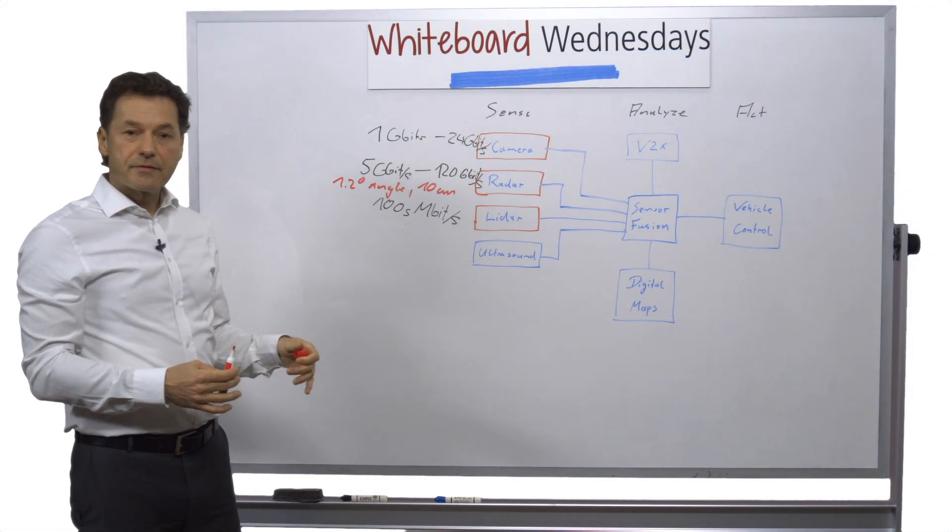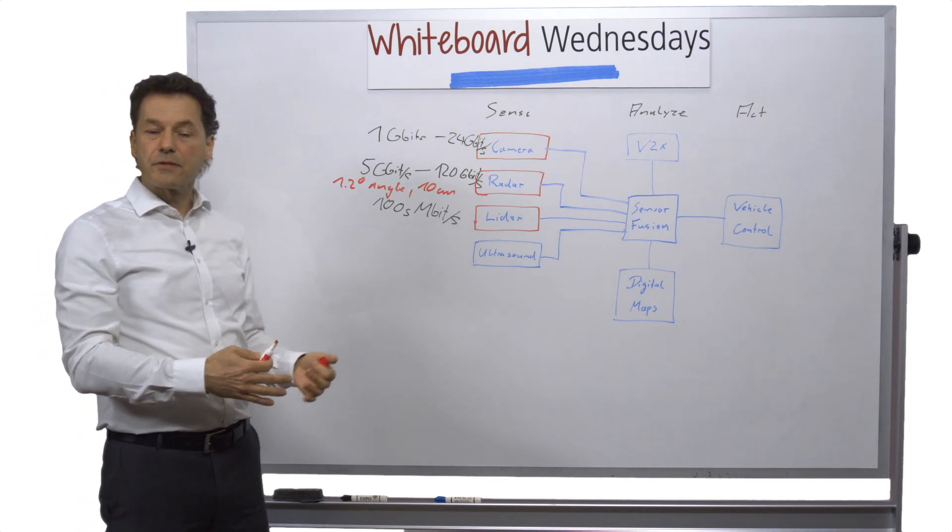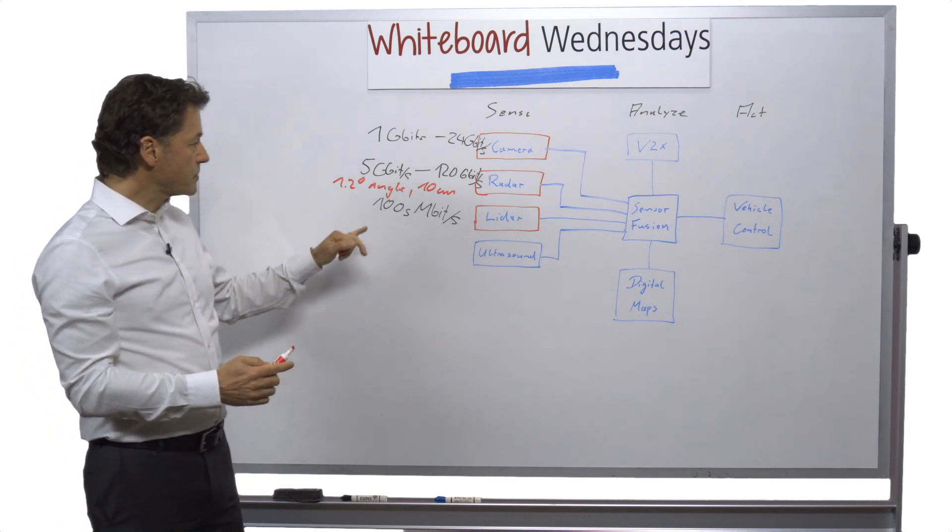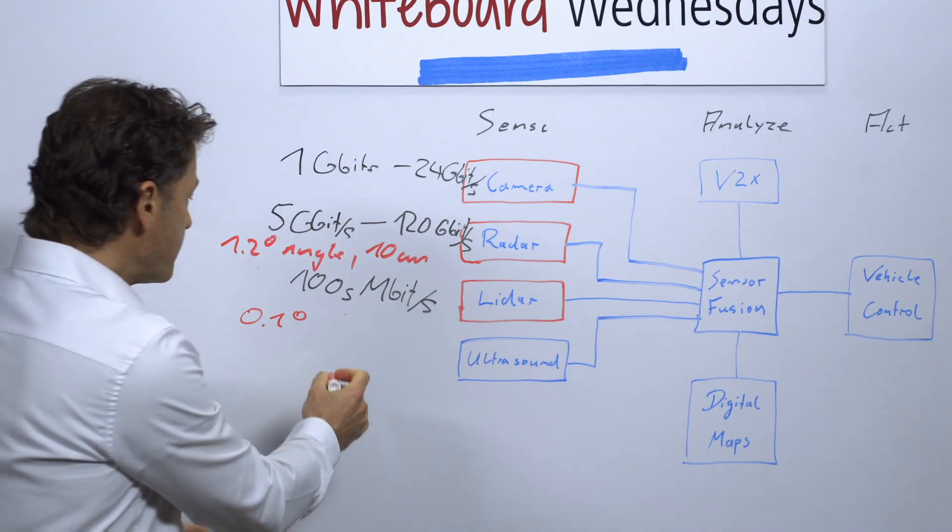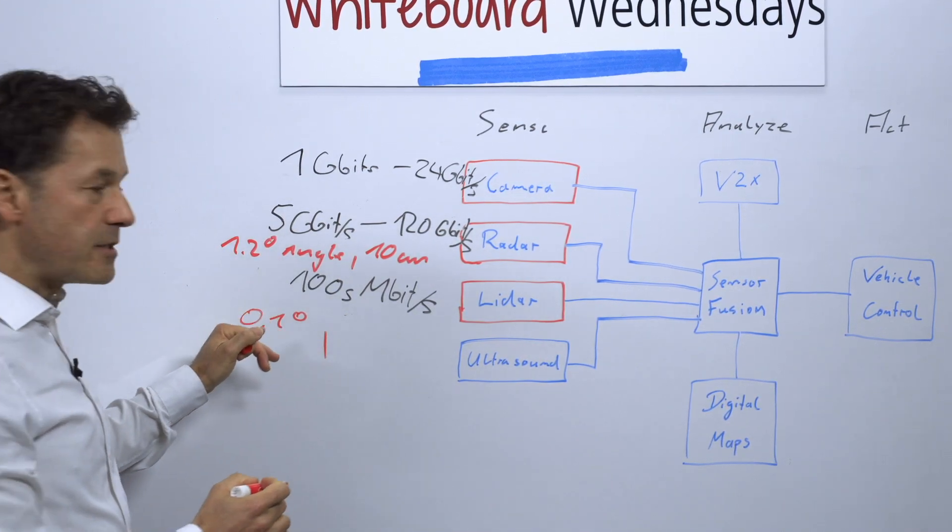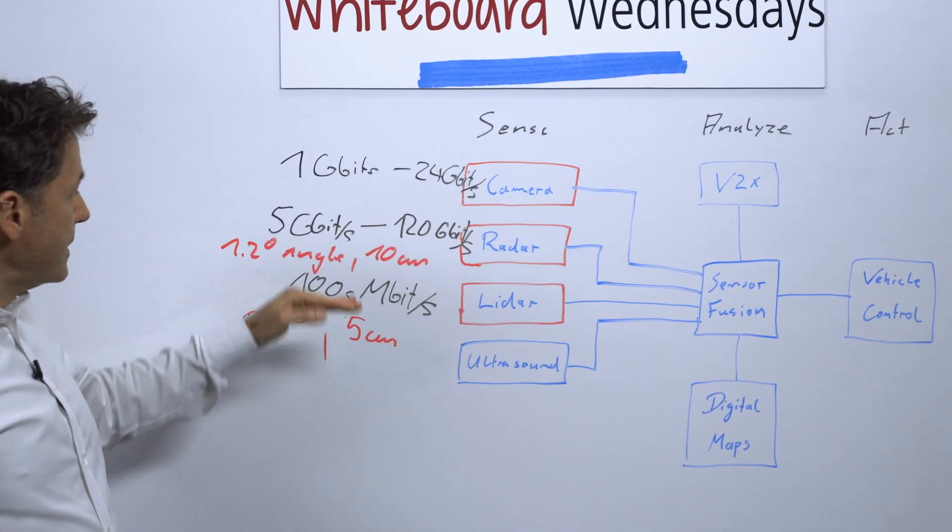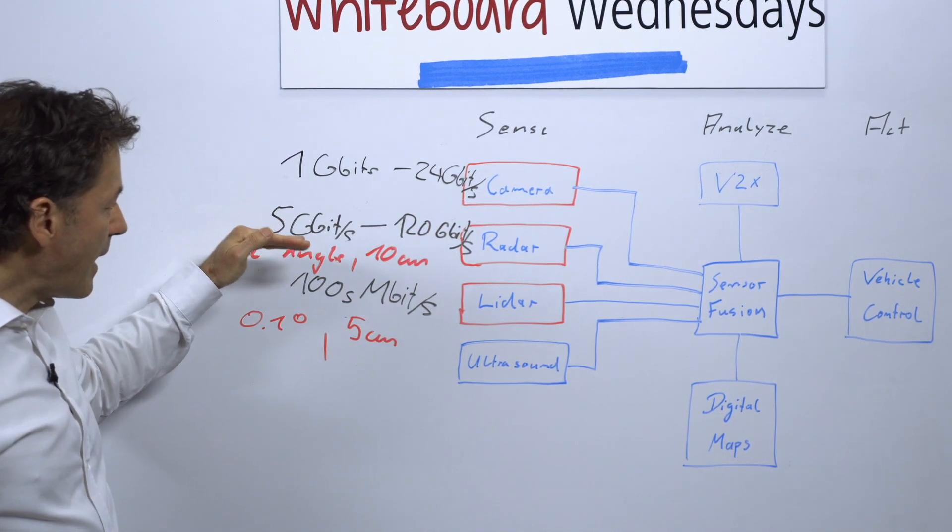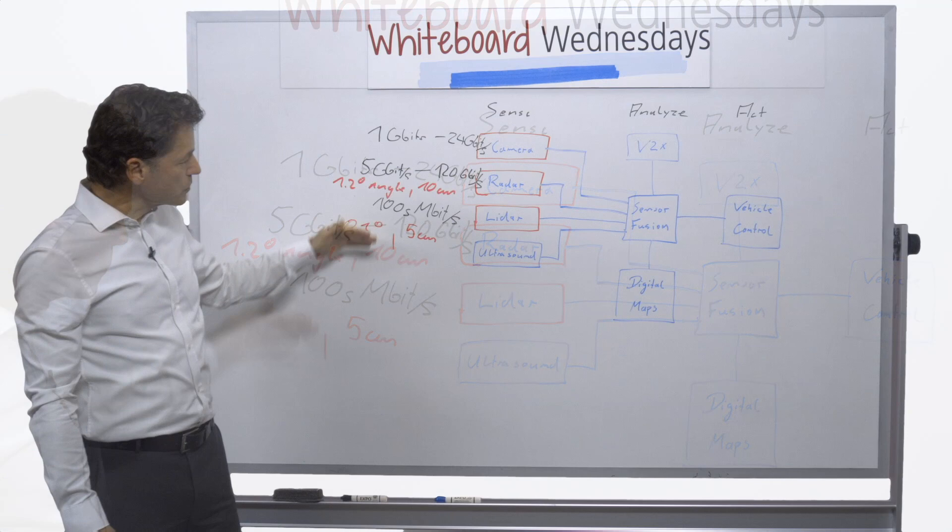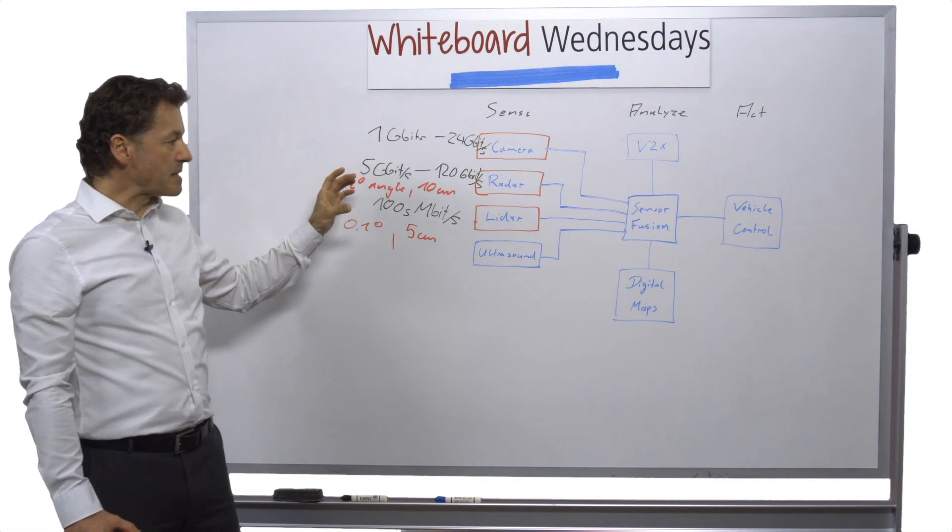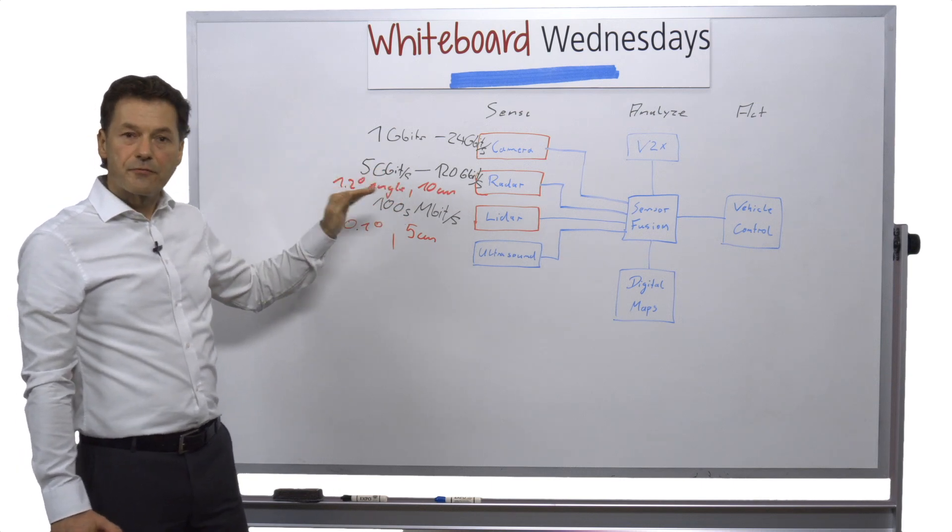On the lidar side, this is a great sensor because it's very accurate and precise to capture the 3D surroundings of a car. The angular resolution of a lidar sensor is actually 0.1 degree, and the range accuracy is even better than radar—about 5 centimeters or below. But with the latest radar concepts, high-resolution imaging radars are getting very close to lidar sensors. You have here a nice kind of redundant system that's very robust against different weather conditions.